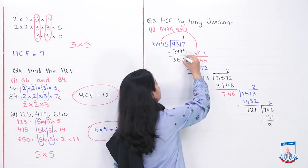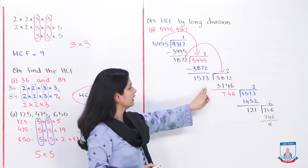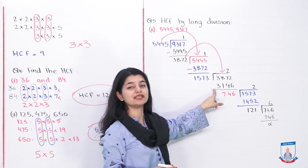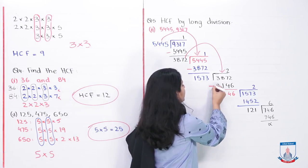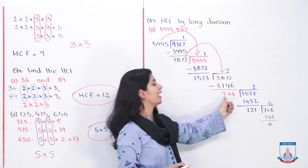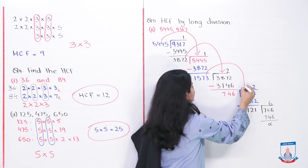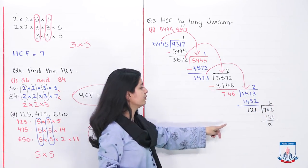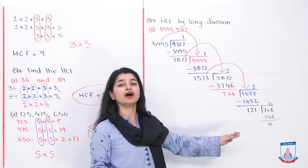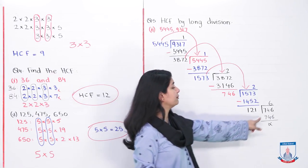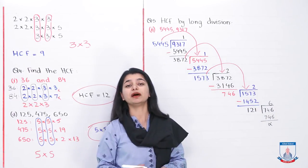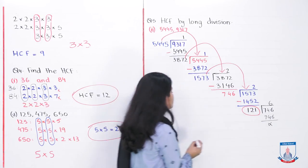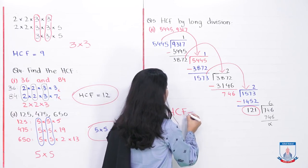The previous divisor 3,872 shifts to become the dividend for the next step, and 1,573 is the new divisor. Dividing: 1,573 multiplied by 2 is 3,146. Subtract to get a new remainder of 746. Then 1,573 shifts down, 746 becomes the new divisor. Dividing again: 746 × 2 = 1,492. Subtracting gives a remainder of 121. And 121 becomes our HCF because when we multiply 121 by 6, the remainder becomes zero.